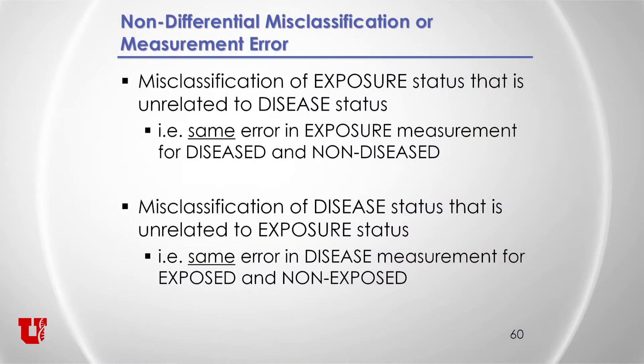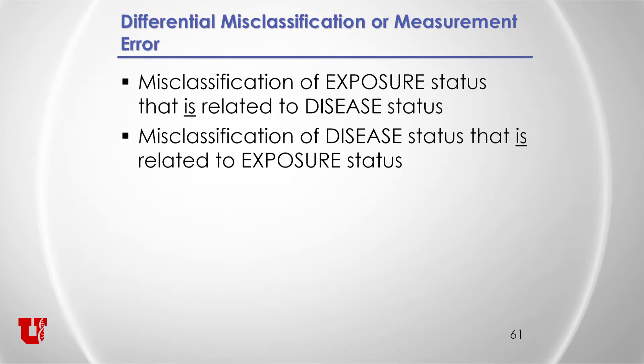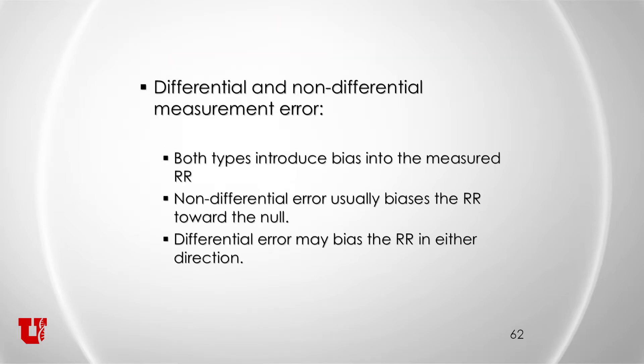Non-differential: misclassification of exposure status that is unrelated to disease status; or misclassification of disease status that is unrelated to exposure status. Differential misclassification is when your misclassification of exposure is related to disease, or misclassification of disease is related to exposure. Both introduce some bias into the measured risk ratio, but non-differential error usually biases the risk ratio towards the null, whereas differential error may bias it in either direction.